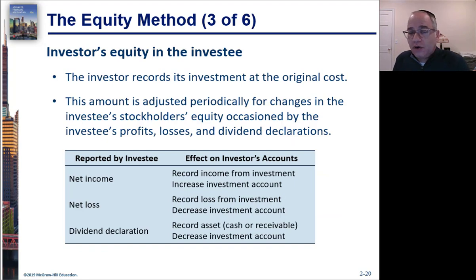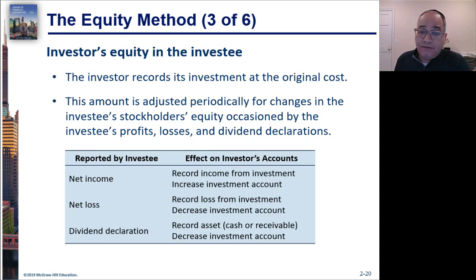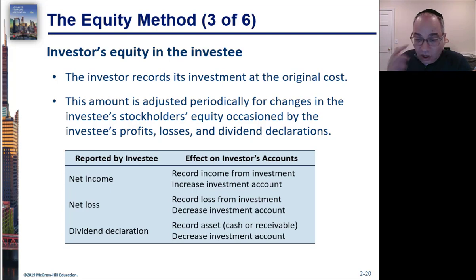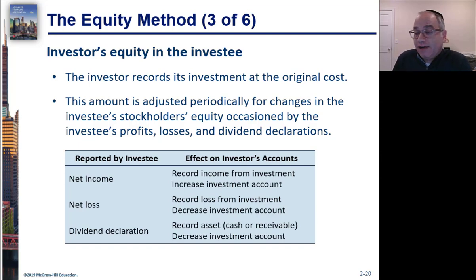The way this works: when the investee has net income, that's going to be income on your P&L and it's going to increase the book value of the investment. If the investee has a loss, then that's going to be a loss on your income statement and it's going to decrease the book value of your investment.